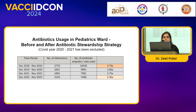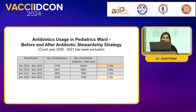The antibiotic usage in the pediatrics ward before and after the antibiotic stewardship strategy — excluding the COVID year — showed that 3.79 times the number of admissions was the number of antibiotic vials used, which came down to 2.36 times the number of admissions after implementation of the antibiotic stewardship strategy.